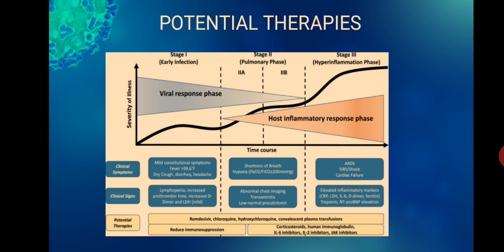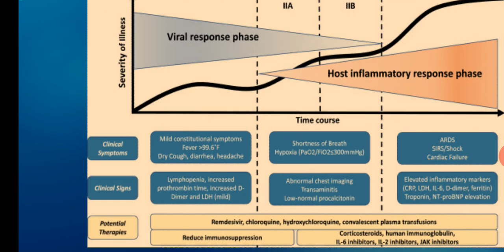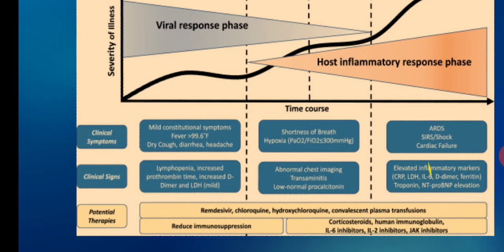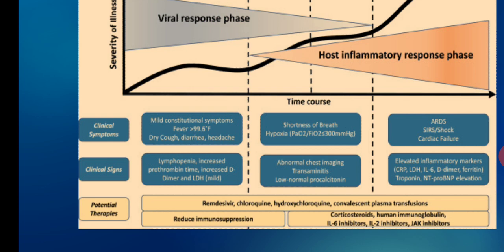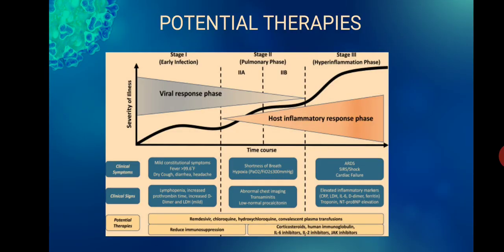Potential therapies are organized around three disease stages: Stage 1 — early infection; Stage 2 — pulmonary phase; Stage 3 — hyperinflammatory phase, where ARDS, shock, or cardiac failure may occur. Potential therapies include remdesivir, chloroquine, hydroxychloroquine, convalescent plasma transfusion, and reduced immunosuppression. Corticosteroids like dexamethasone, human immunoglobulins, interleukin-6 inhibitors, interleukin-2 inhibitors, and JAK inhibitors can be given to save patient lives.